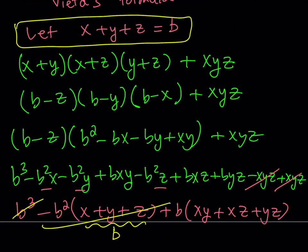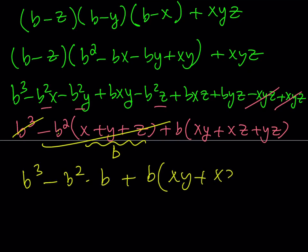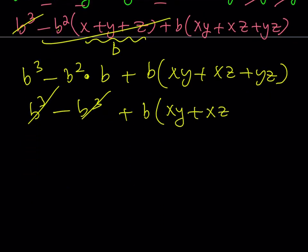Let me reiterate. Our initial assumption was x + y + z = b, taken from Vieta's formulas — normally it's negative b over a but I kept it positive here. With that assumption we ended up with b³ − b²(x + y + z) + b(xy + xz + yz). Since x + y + z = b, we replace it to get b³ − b² · b + b(xy + xz + yz), which is b³ − b³ + b(xy + xz + yz), and the b³ terms cancel, leaving b times (xy + xz + yz).